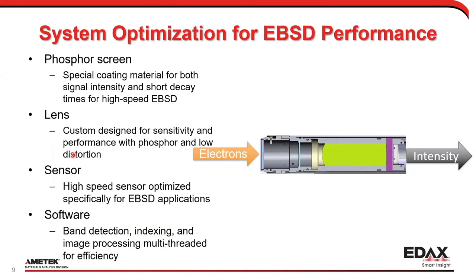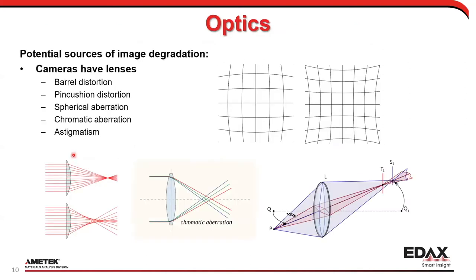When optimizing an EBSD system, you're optimizing a phosphor screen coded for high intensity signal and very fast decay time. That decay time is not trivial, especially during high-speed EBSD. The lens system needs to be highly sensitive — you want every photon through the system — but also very low distortion. Our lens designer takes care of a lot of these distortions, so we have very few artifacts in our optical path.